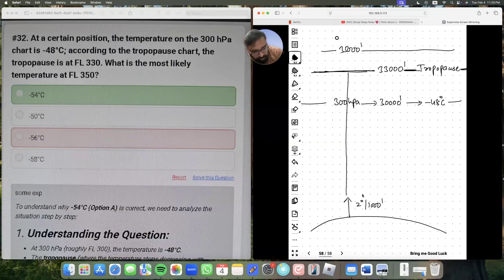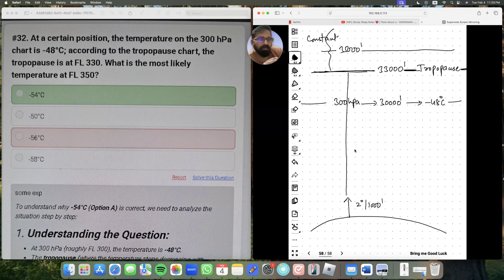After that, you know, the temperature is constant. Whatever temperature is at tropopause, it will be the same. Now that means the temperature at 35,000 feet equals the temperature at 33,000 feet.